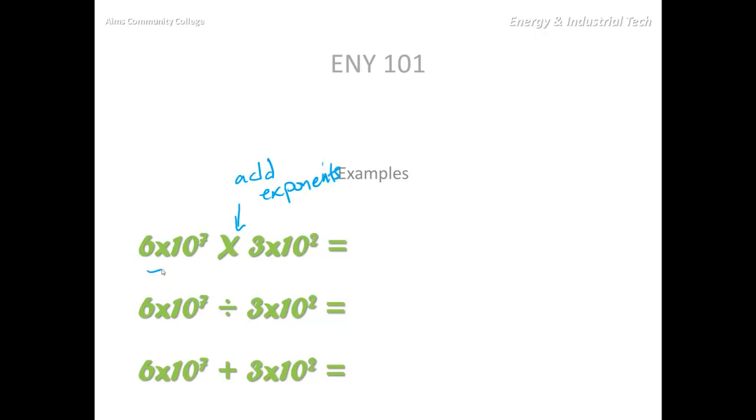So six times ten to the seven times three times ten to the two. Well I have to multiply my six times three and then I also have to multiply my ten to the seven and ten to the two, but what we saw here is that I add exponents. So I'm going to end up adding these two together. That's going to give me eighteen times ten to the nine. I've multiplied my bases, six and three, and I've added my exponents.